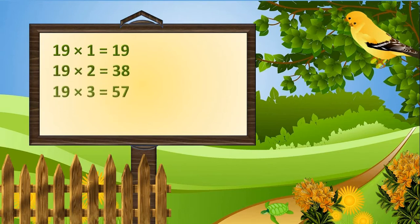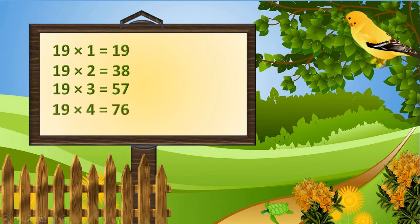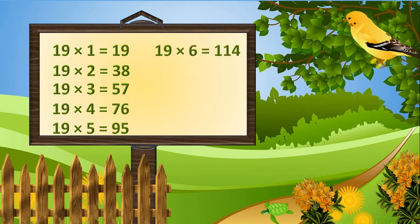19 threes are 57, 19 fours are 76, 19 fives are 95, 19 sixes are 114, 19 sevens are 133.